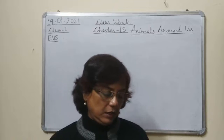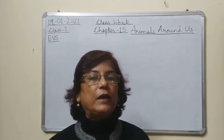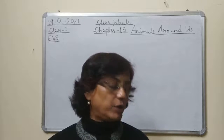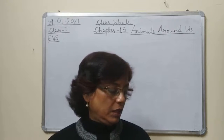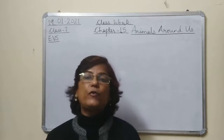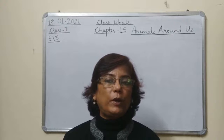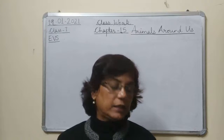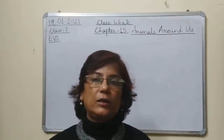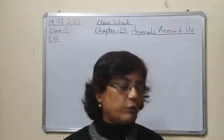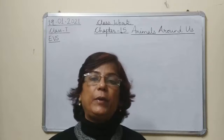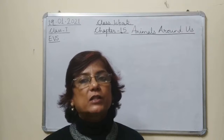Now you can see the homes of pet animals on page number 95. The pet animals are dog, cat, bird, fish, and rabbit. The baby of a dog is known as a puppy, and its home is a kennel. The baby of a cat is a kitten, and its home is a box or a basket. The baby of a bird is known as a chick — ya usko nestling bhi kehte hai — and the home of a bird is a nest. The baby of a fish is a fingerling, and its home is known as an aquarium. And the baby of a rabbit is a bunny, and its home is a hutch.